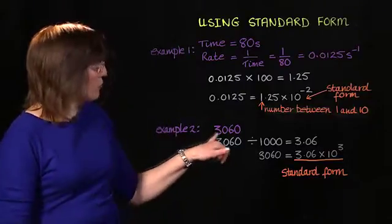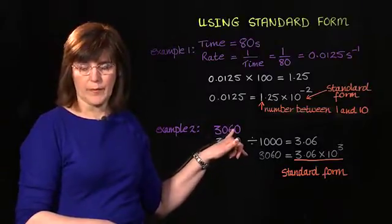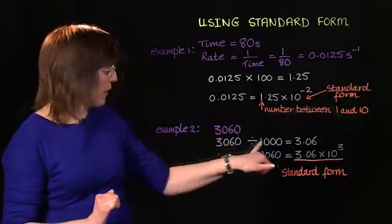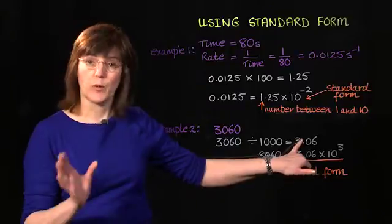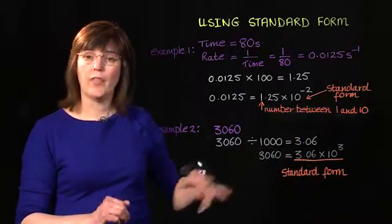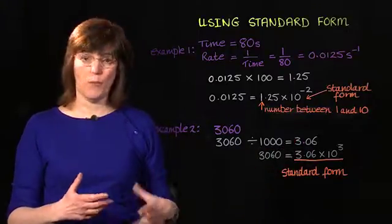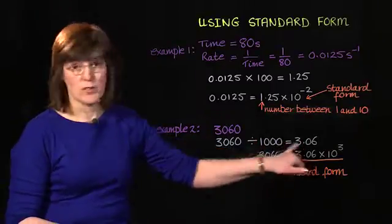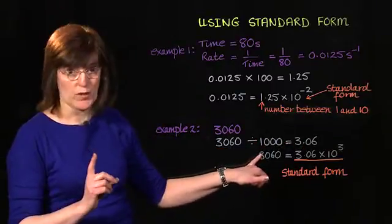Say we have the number 3060. If we divide that by 1000, we can get a number between 1 and 10. And then to write it in standard form, we write 3.06, our number between 1 and 10.